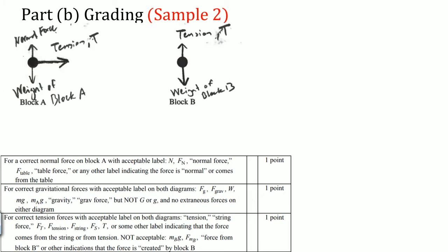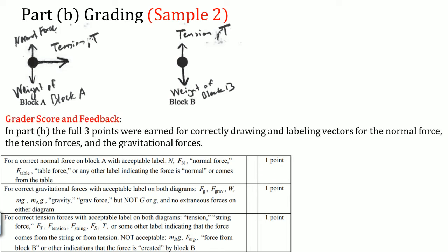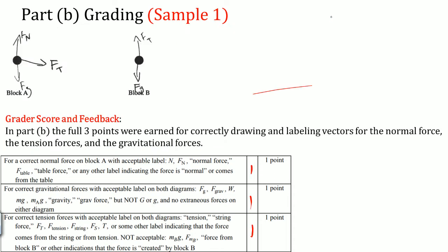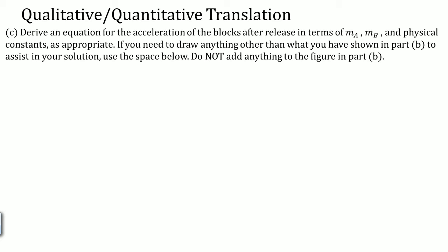Another student wrote out the words: normal force, tension, weight of the block, tension, normal — that should get all three points as well. You can write the subscript or write out the words. Also note that weight is accepted as the same thing as force of gravity.